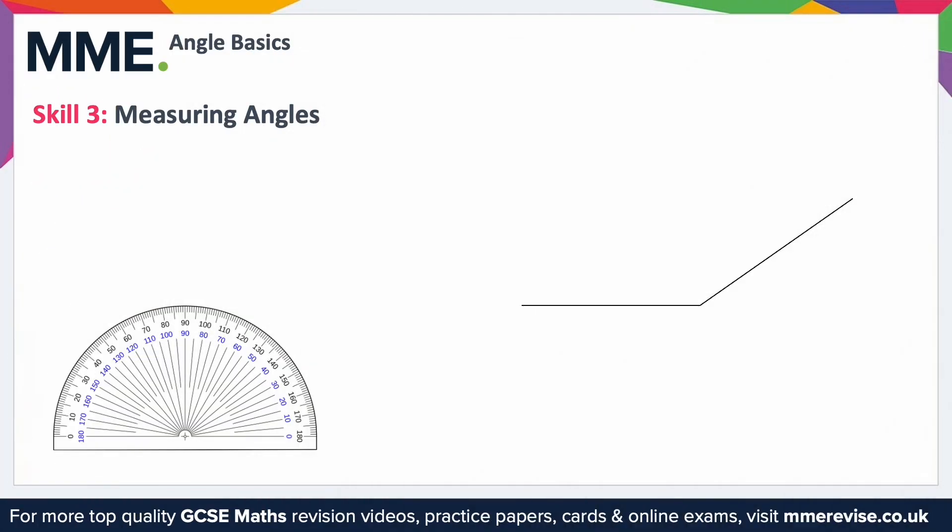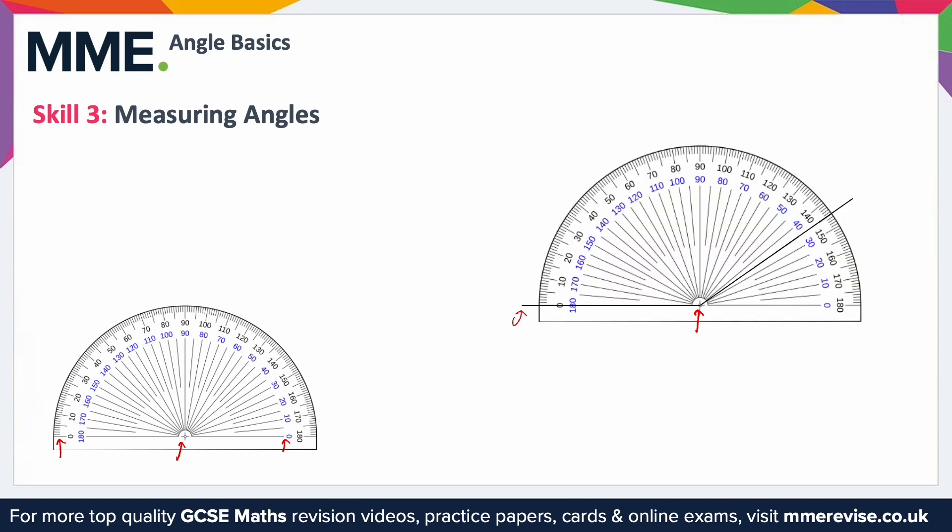To measure angles you're going to need a protractor. The first step when placing your protractor is to line the middle of the protractor as in this little crosshair here up with the corner. This point here. Then you need to make sure the zero that you're measuring from, so for example there's a zero there or a zero here, are lined up perfectly with the line so I'm going to line that up with this line here.